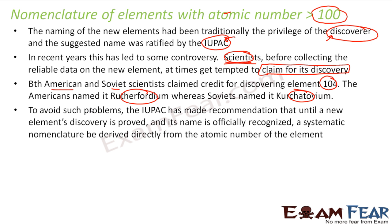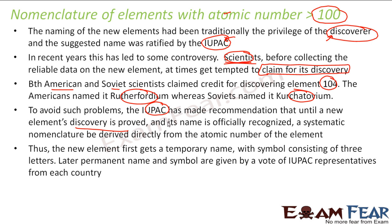To avoid such problems, IUPAC decided that until a new element's discovery is proved and ratified by IUPAC, the scientist who has found the new element should use a proper naming convention given by IUPAC to name it. This temporary IUPAC name is the name given to a newly discovered element until it is officially approved.